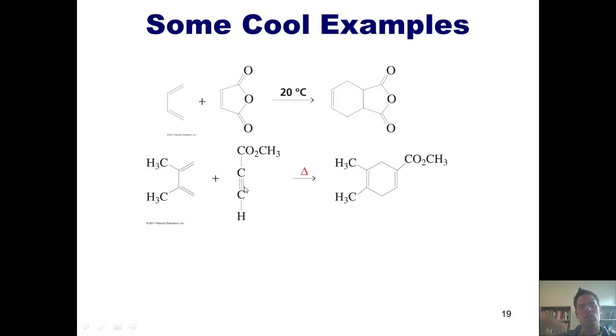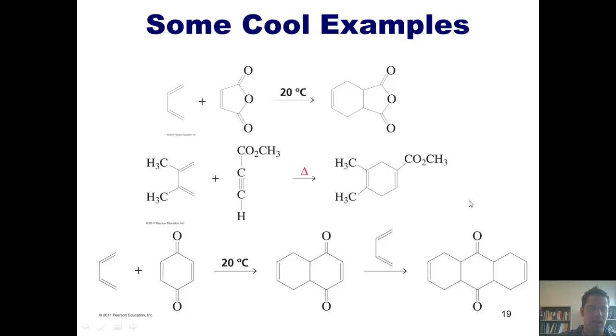Because this is a triple bond and it's only swinging out one of its two pi electron sets, it retains a double bond configuration in the product. And here's another example.